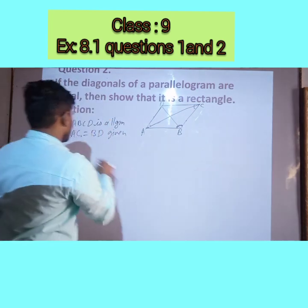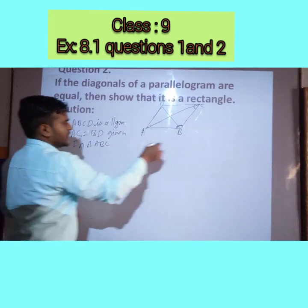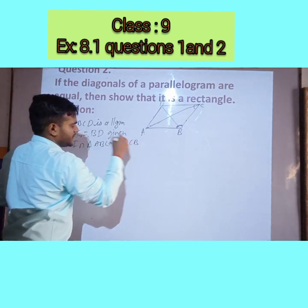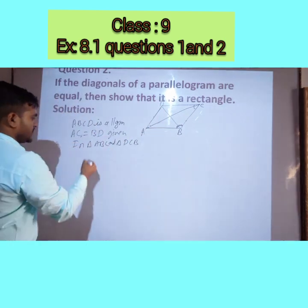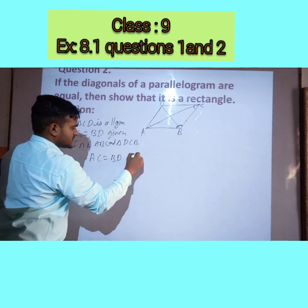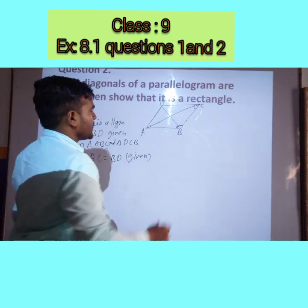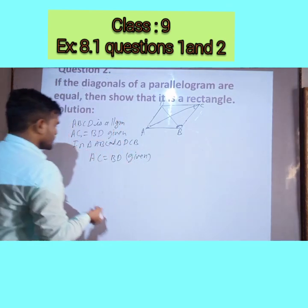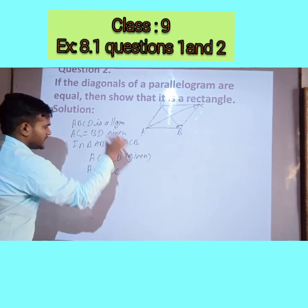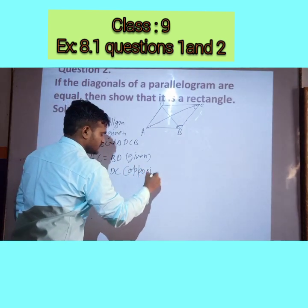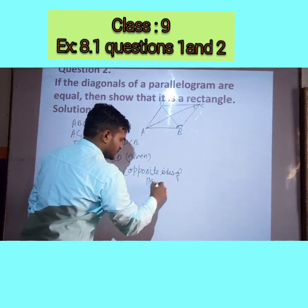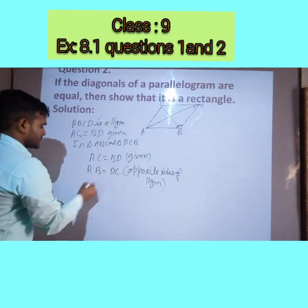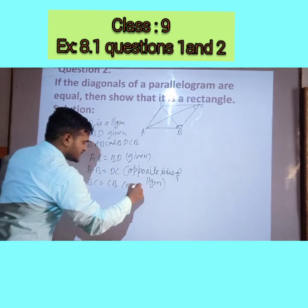We take triangle ABC and triangle DCB. In these two triangles: AC = BD (given), AB = DC (opposite sides of a parallelogram are equal), and BC = CB (common side). So all three corresponding sides are equal.